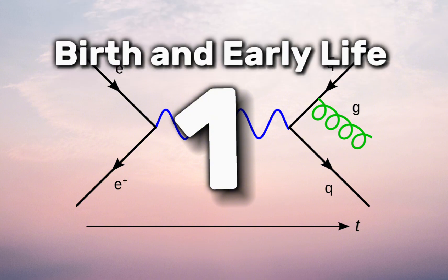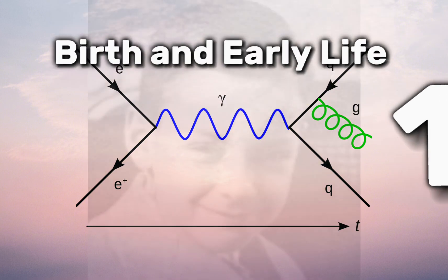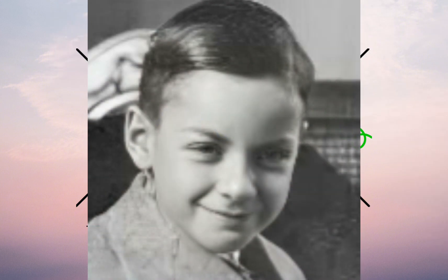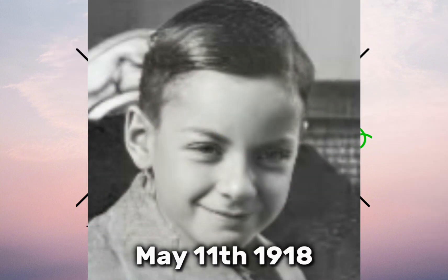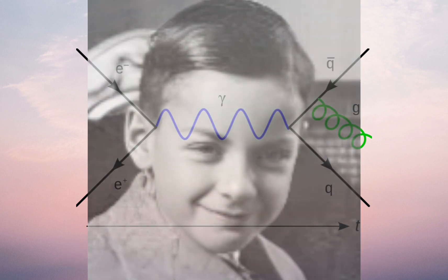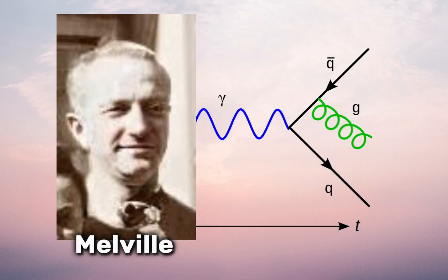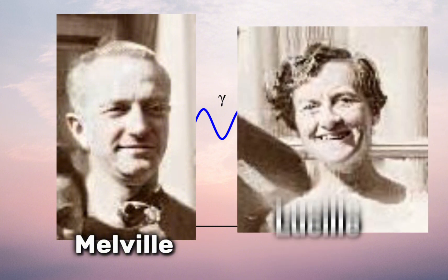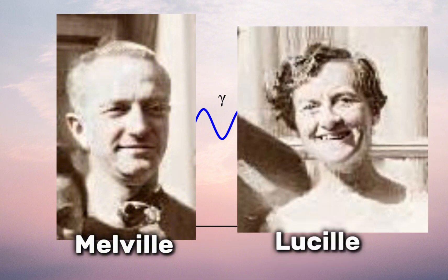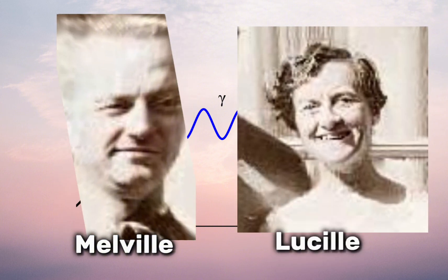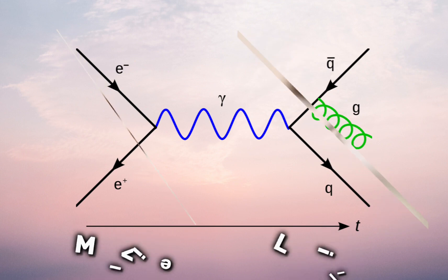1. Birth and Early Life. Richard Feynman, born on May 11, 1918, in New York City, was the son of Melville and Lucille Feynman. His father, Melville, was a clothing salesman with a strong interest in science, which he instilled in young Richard. Feynman's mother, Lucille, nurtured his artistic side and encouraged his early fascination with electronics.